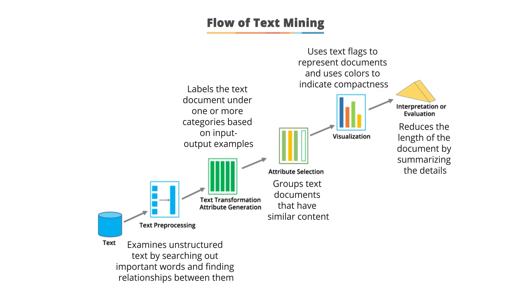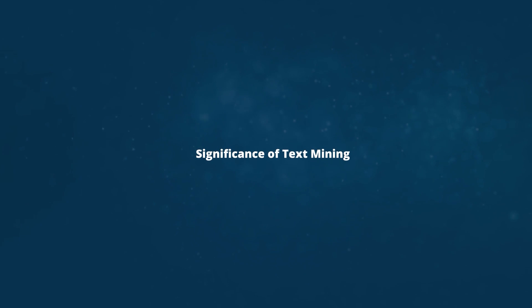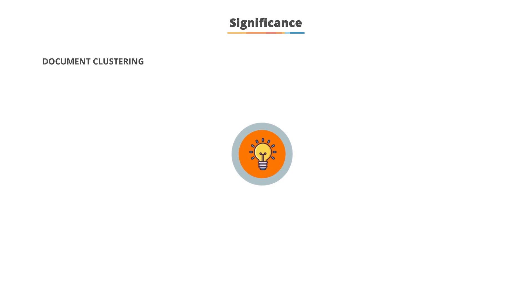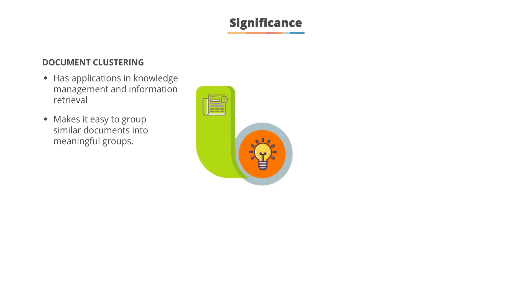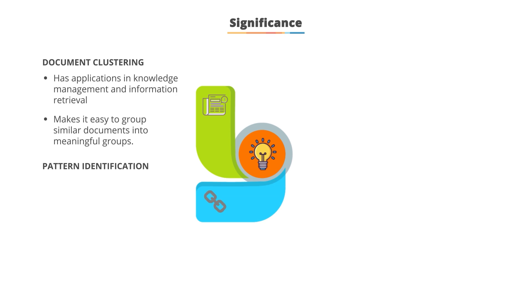Let's understand the significance of text mining. Document clustering is an important part of text mining with many applications in knowledge management and information retrieval. Clustering makes it easy to group similar documents into meaningful groups, such as in newspapers where sections are grouped as business, sports, politics, and so on.